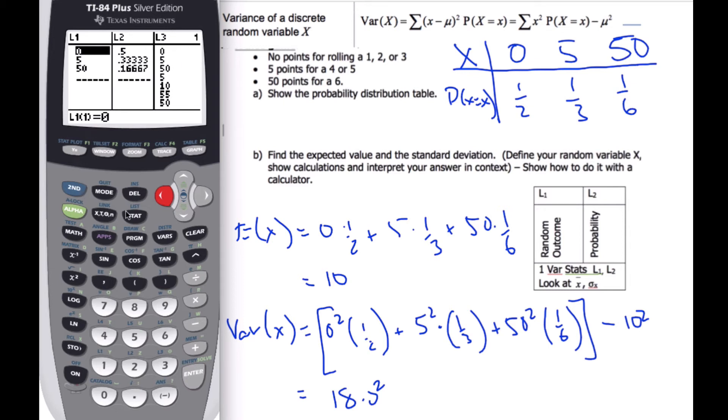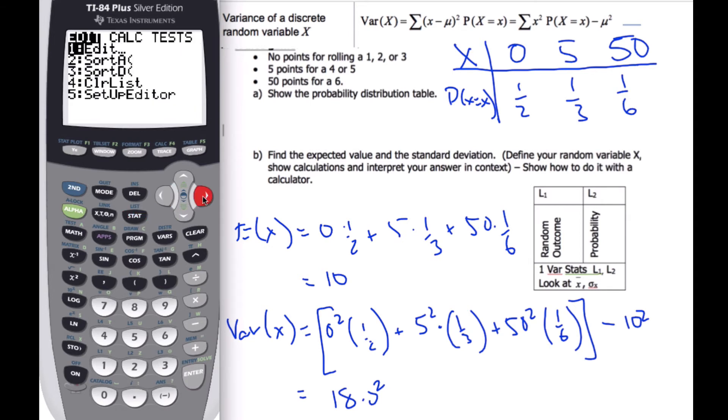And then I go to statistics, I'm going to calculate one variable statistics, and I want L1, so second number one, to be my list, and my frequency is the probability. And then I calculate my variable. So here is my expected value of 10, and this is my standard deviation.